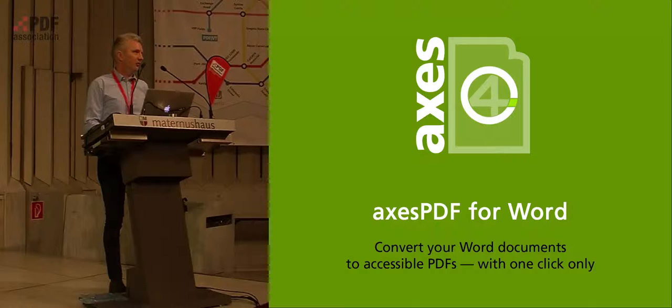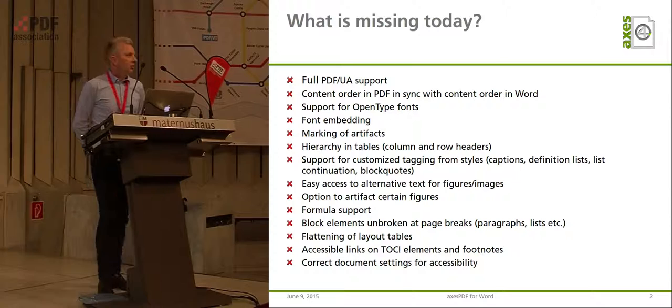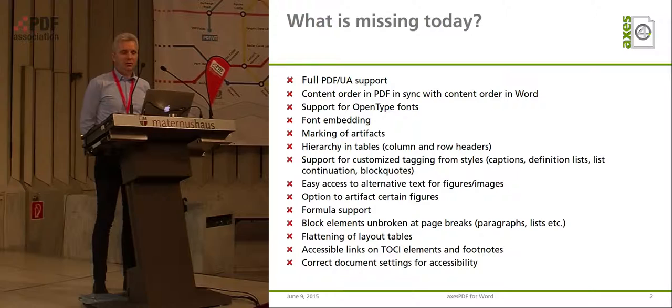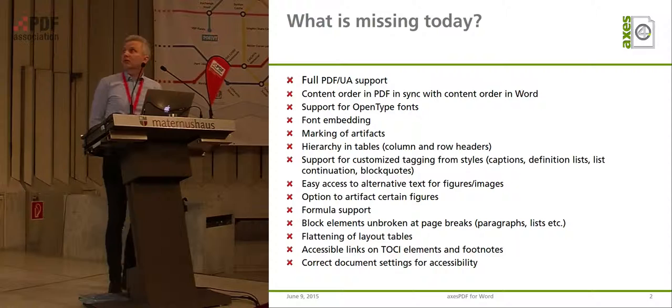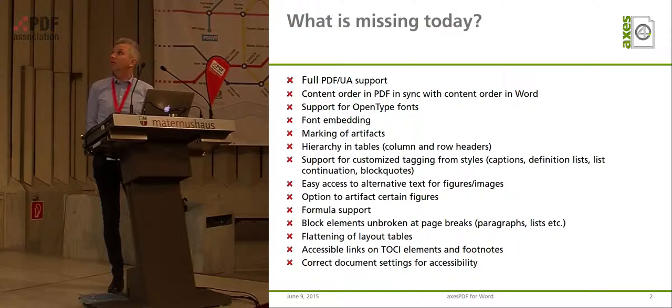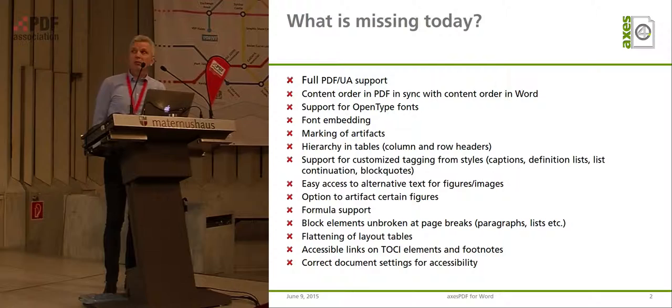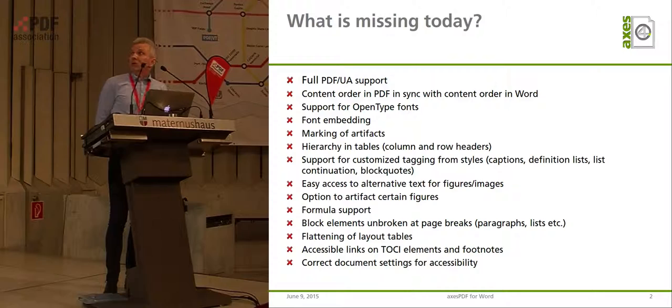We have introduced a brand new tool to create accessible PDFs from Word with a one-click tool only. What is the problem with creating accessible PDFs from Word today? Quite a lot of things are missing from the tools: no PDF-UA support, the content order in the PDF is not in sync with the content order in Word, font embedding is missing, the marking of artifacts is non-existent, and hierarchy in tables is very difficult, if not impossible to make.